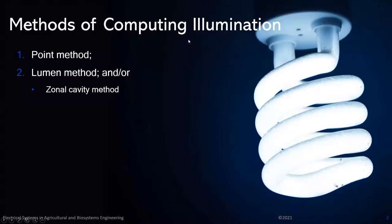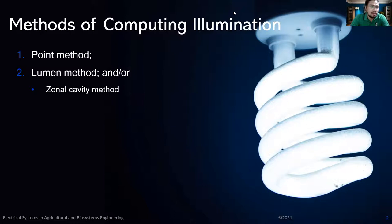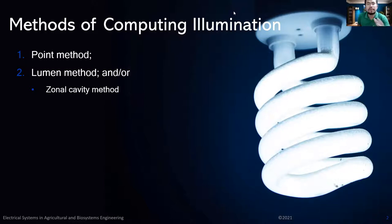There are two identified methods to compute for illumination. The first is the point method, which considers the inverse square law, and the second is the lumen method, which is expanded into the zonal cavity method. The zonal cavity method is sometimes considered a third method because it divides the room to be illuminated into zones or zonal cavities.